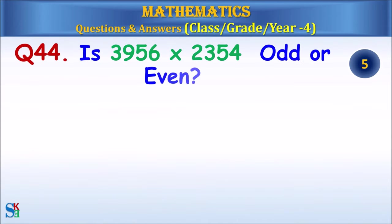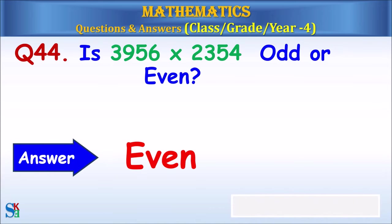Question 44: Is 3956 multiplied by 2354 odd or even? The answer is even.